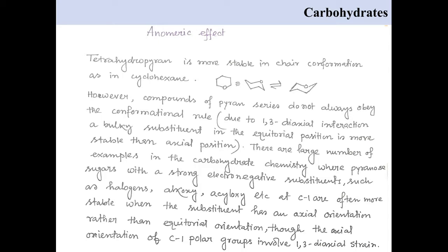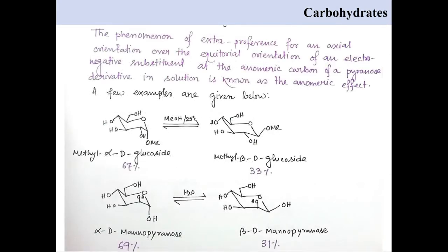Next page, we are given two examples. In the first example, we see the percentage of existence of methyl alpha-D-glucoside is 67% whereas methyl beta-D-glucoside is only 33% in methanol. But according to the conformational rule, the beta-anomer should be the more stable compound.